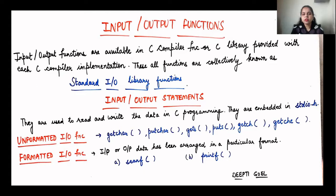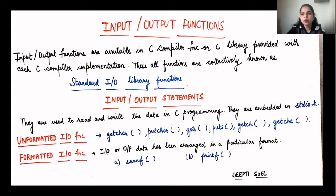The input output library functions are of two types which are inbuilt in the library: the unformatted input output functions and the formatted input output functions. These are basically used to read and write data in C programming. The input function means the compiler will read certain values or characters that you provide for execution of the program, and when the program is executed, certain statements will print output in the output stream.